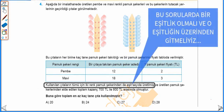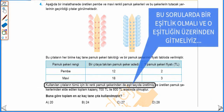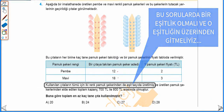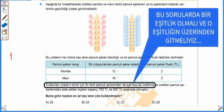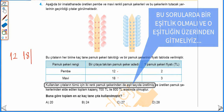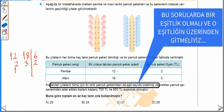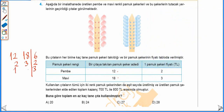Her iki renk için de üretilen pamuk şekeri sayısı birbirine eşitse 12'nin ve 18'in ortak bir katı olmalı. 12 ve 18'in en küçük ortak katını bulduğumuzda 6'ya böldüğümüzde 2 ve 3. 2'ye böleriz 1, 3'e böleriz 1. 6 kere 2 eşittir 12, 12 kere 3 eşittir 36.